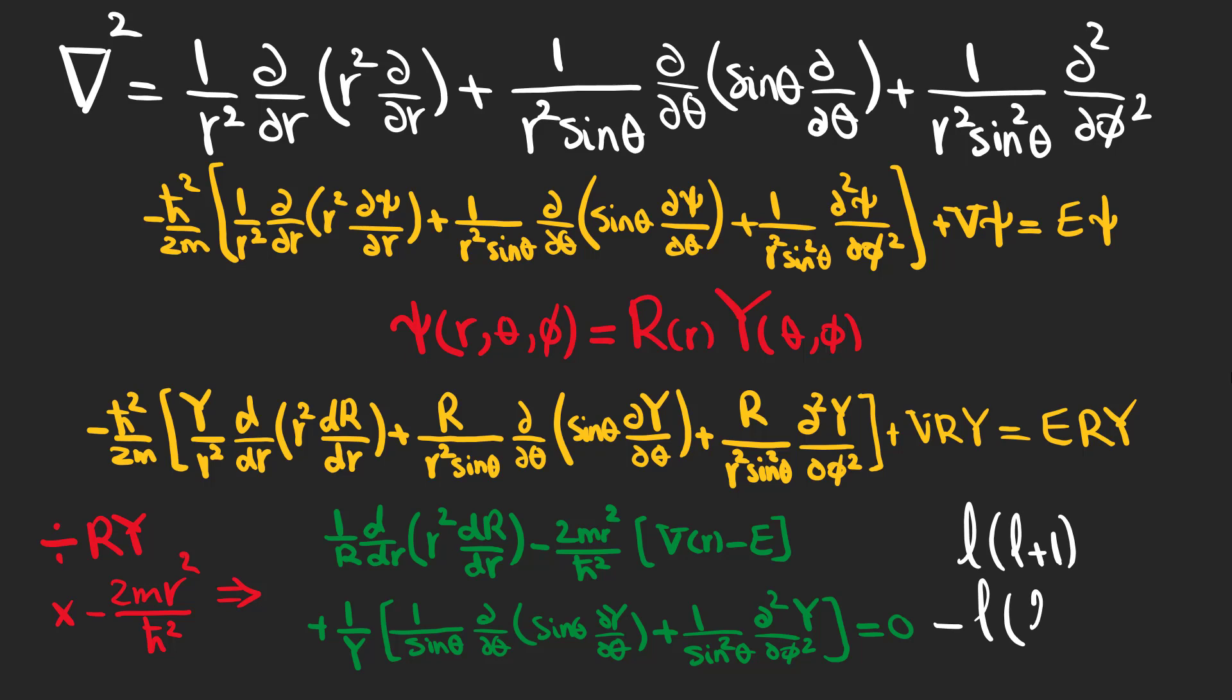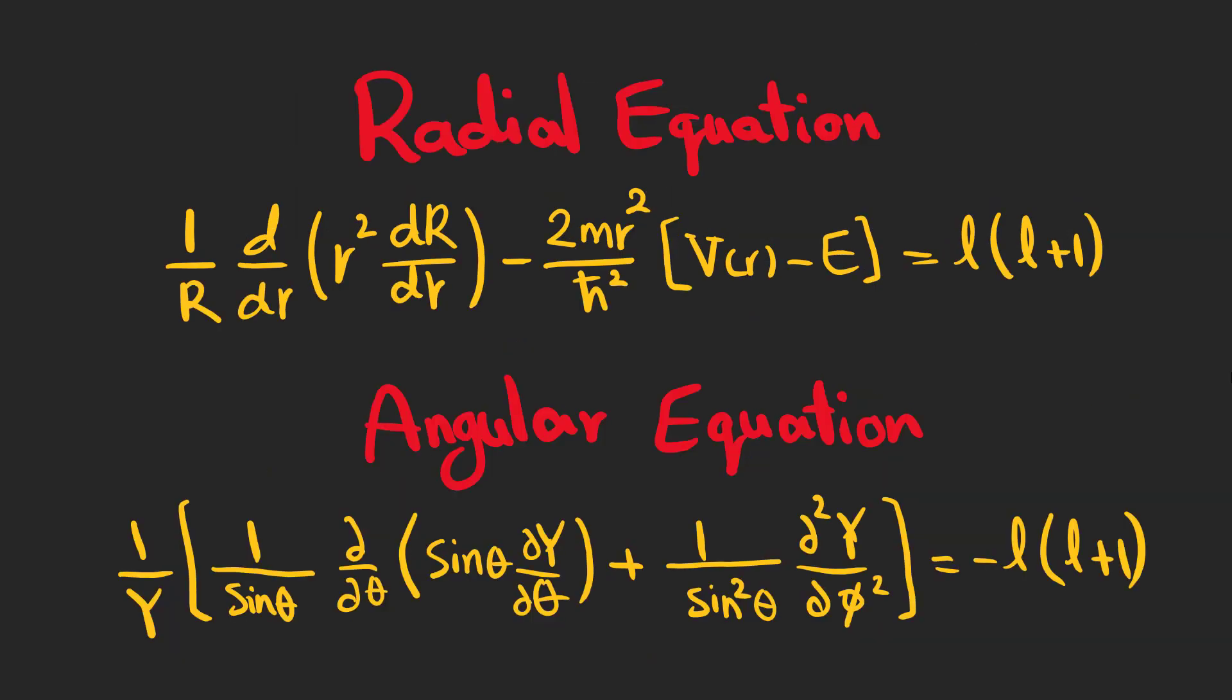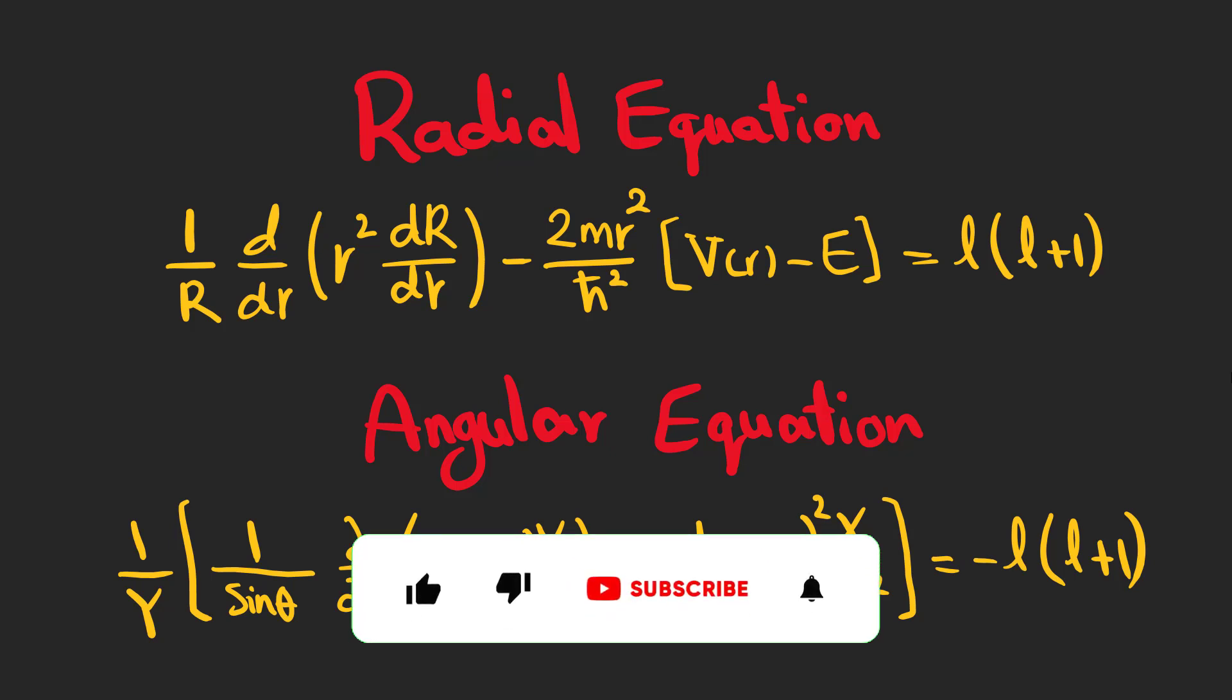We let these constants be L multiplied by L plus 1 and minus L multiplied by L plus 1. Now, we have a radial equation which is only dependent on r, and an angular equation which is dependent on theta and phi. We are going to solve these equations in our upcoming videos and see what these equations represent.